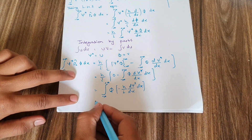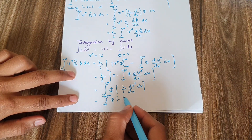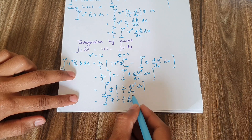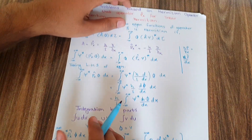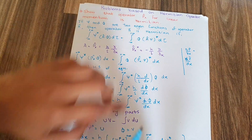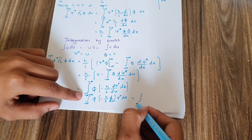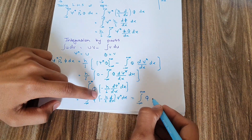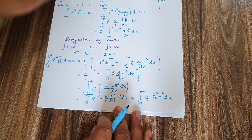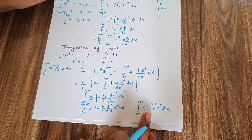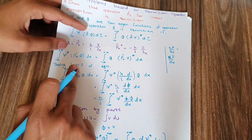This simplifies to: from negative infinity to positive infinity, phi times minus(ℏ/i)(d/dx) psi*, dx. As you know, minus ℏ/i times d/dx is equal to px*. So I can write this equation as: from negative infinity to positive infinity, phi times px* times psi*, dx. This result is exactly equal to the right-hand side of the equation.